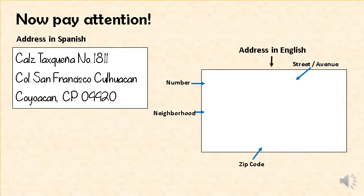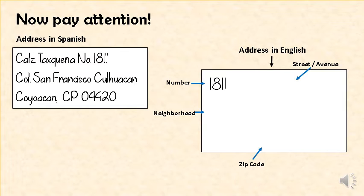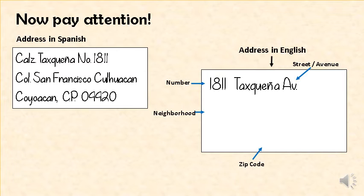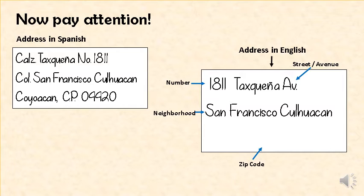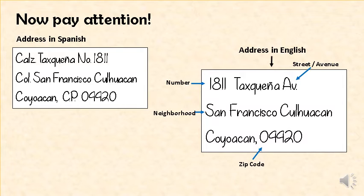However, when you write an address in English, you begin with the number. Sin embargo, cuando escribes una dirección en inglés, comienzas con el número. Then the name of the street or avenue — 1811 Tasqueña Avenue. Then the name of the neighborhood — San Francisco, Culhuacan. And the zip code — Coyoacan, 04420.